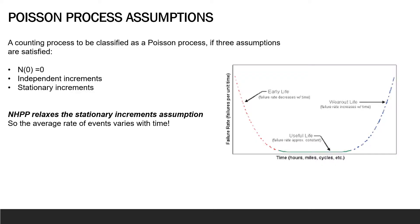One way to start learning about the non-homogeneous case is to recall some of the assumptions we covered in the initial Poisson process module. Recall that we said that in order for a counting process to be classified as a Poisson process, we have three assumptions that need to be satisfied which are listed here.